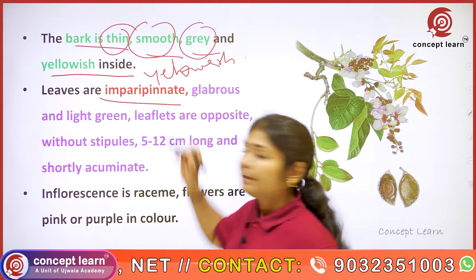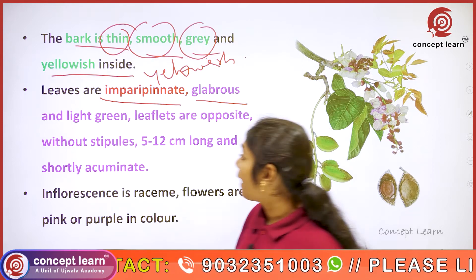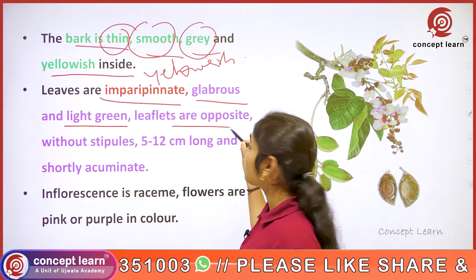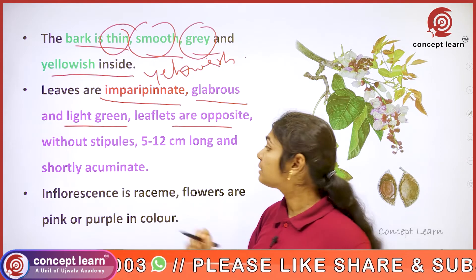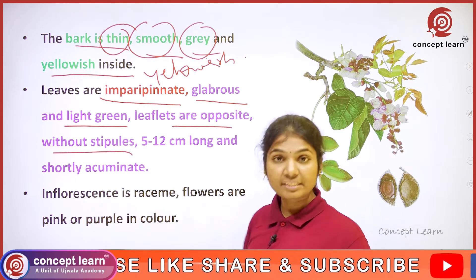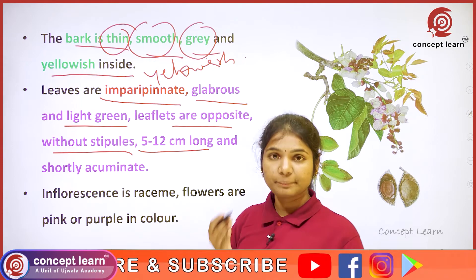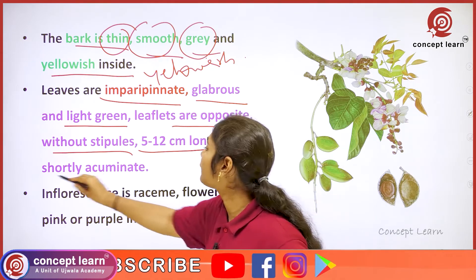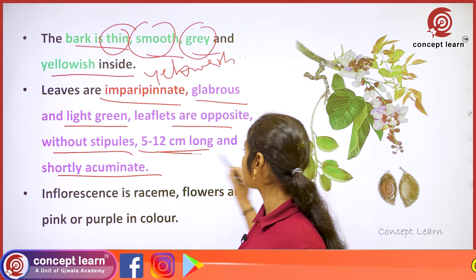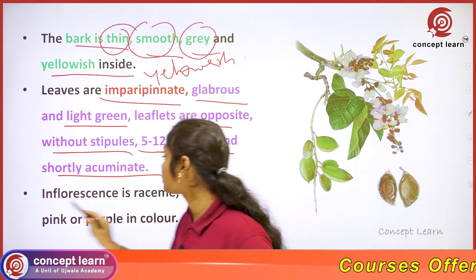Leaves are imparipinnate, glabrous, and light green in color. Leaflets are opposite and without stipules, 5 to 12 centimeters long and shortly acuminate in nature.